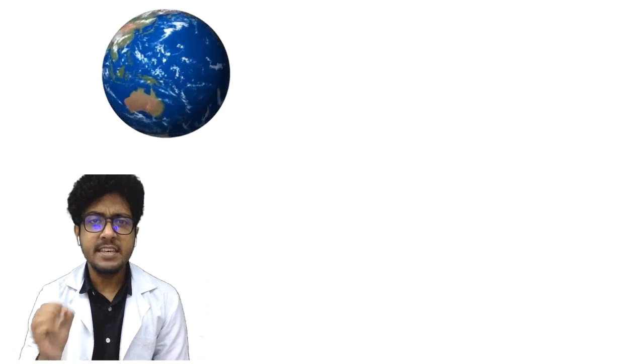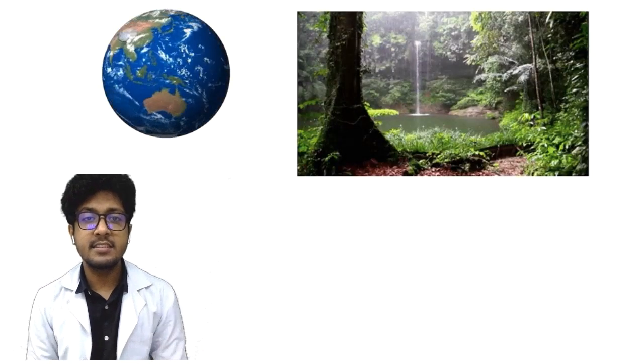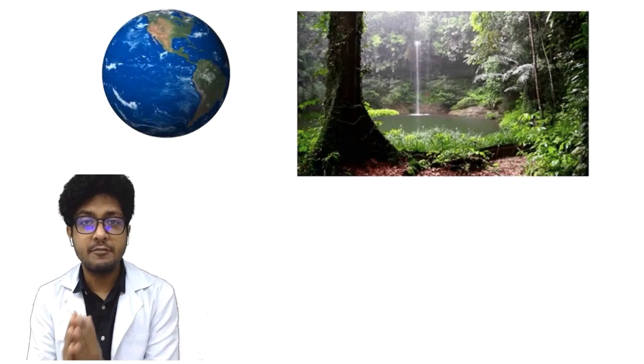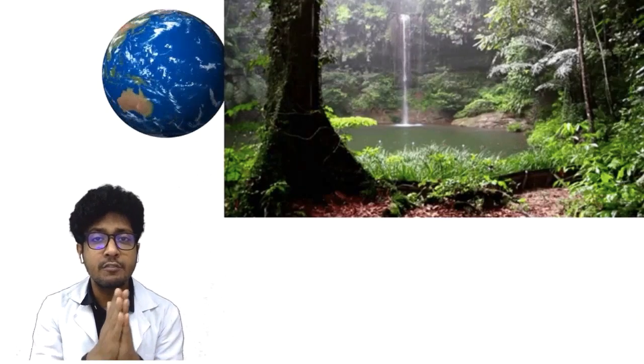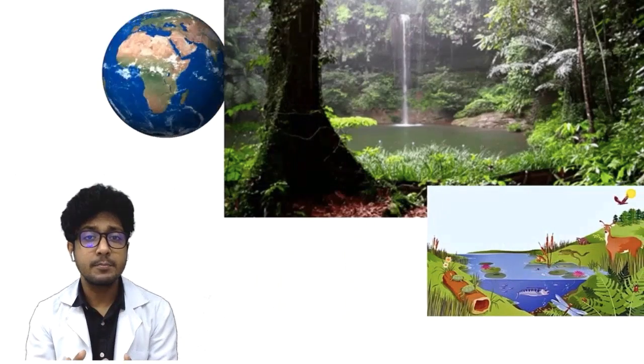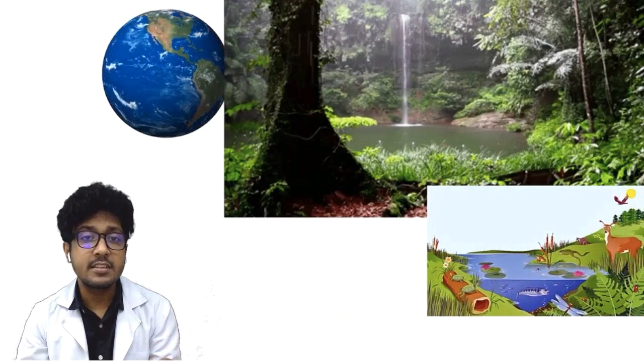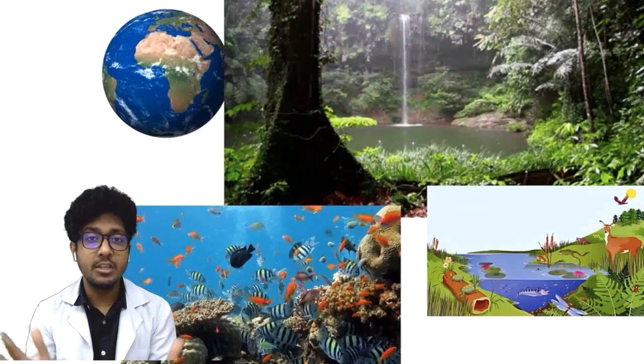Starting from deep-sea hydrothermal vents to coral reefs to extreme temperature regions of deserts and polar regions of Antarctica, everywhere we can find different forms of life. These are different types of biomes. Here we can see a biome of tropical rainforest. A water body like a lake or river acts as an ecosystem. In a biome, we can get many ecosystems, and in each ecosystem, we can get many communities.